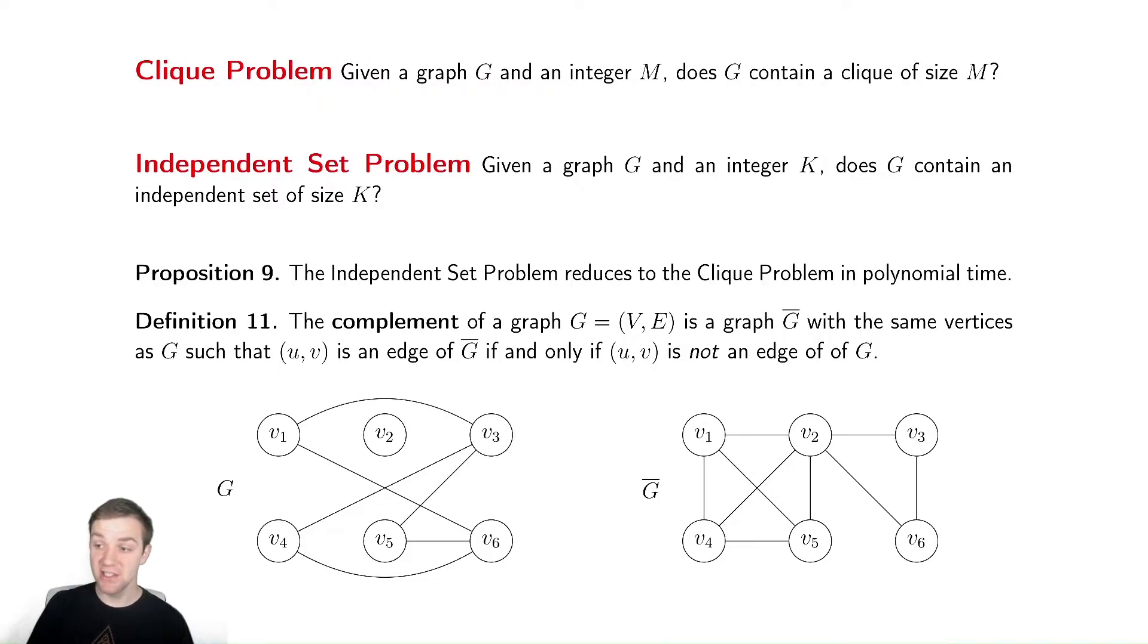G bar is essentially taking the complete graph and then removing all of the edges that are in G, and that's going to make G bar. Not necessarily the way you want to think about it, but this is what the graph complement is. Let's see how this is going to help us, though.